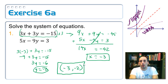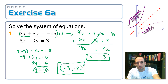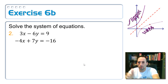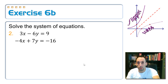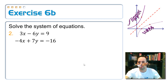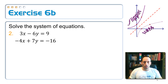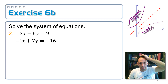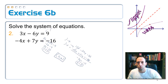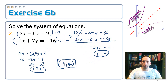I bet you're wanting an opportunity to do one on your own — of course you are. So try this one. This one might be a little bit trickier; you may have to multiply both equations by something in order to get one of the variables to eliminate. Give that a try. What's your point of intersection? Did you get 11, comma 4?